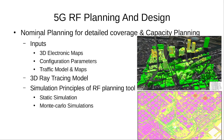Then we go to the next step, which is nominal planning, used for detailed coverage and capacity planning. This step is normally done using an RF planning tool. Although we do not have an RF planning tool in this course due to intellectual property constraints, we are going to discuss how any RF planning tool works and what inputs it requires, such as 3D electronic maps.